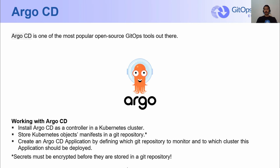Now let's talk a bit about Argo CD, which is one of the fastest growing open source GitOps tools out there. The project is part of the Argo family, a set of cloud-native tools for running and managing jobs and applications on Kubernetes. To start working with Argo CD, we need to install Argo CD in a Kubernetes cluster, store Kubernetes manifests in a Git repository, and create an Argo CD application by defining which repository to monitor and to which cluster this application should be deployed. The Argo CD application can be for an application, infrastructure resources, or even other Argo CD applications, which is what's known as the app of apps pattern.